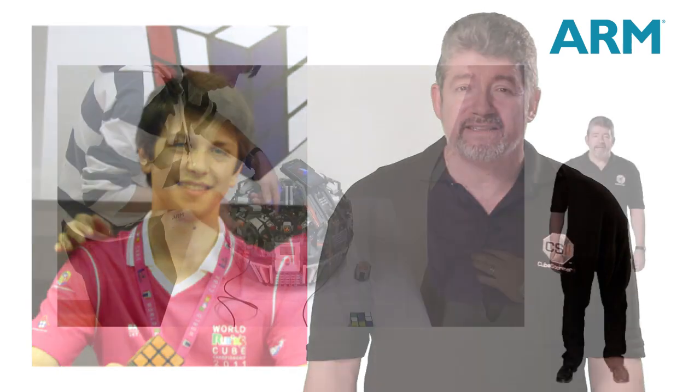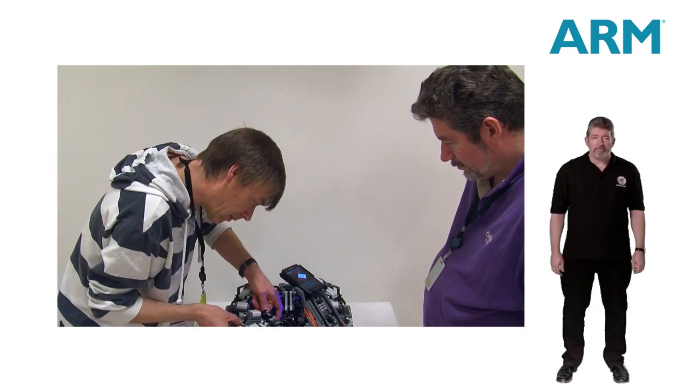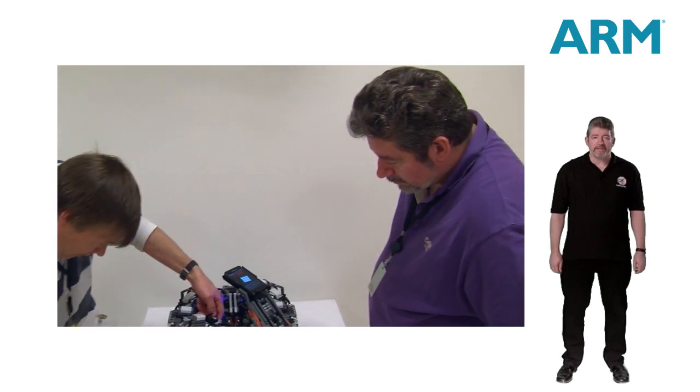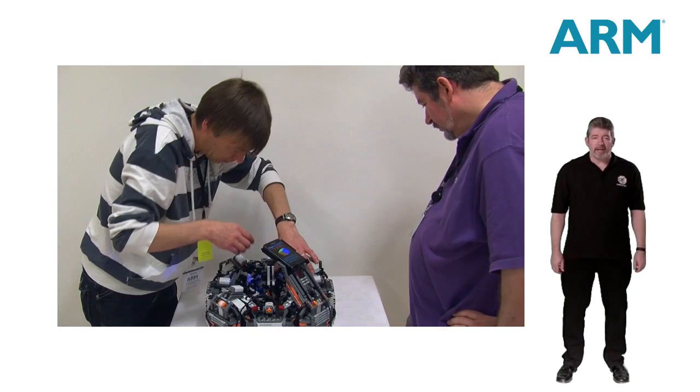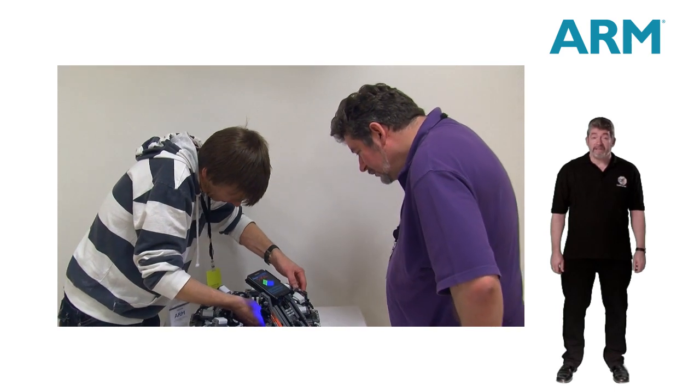Our target was to beat the human world record, which at the time stood at just over 7 seconds. However, a young Australian, Felix Zemdegs, beat this several times before setting an incredible world record of 5.66 seconds. Each time the record was broken made us more determined to make Cubestormer 2 faster. Mike and I worked flat out to reduce the time and bring it closer to our target of 5.5 seconds. But we were concerned that Felix might beat his own record at any time.